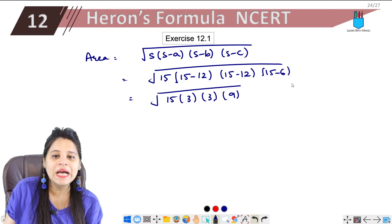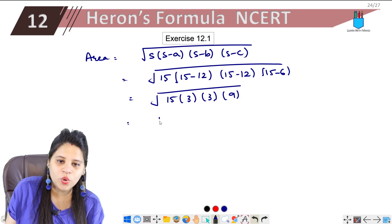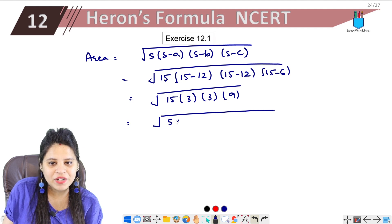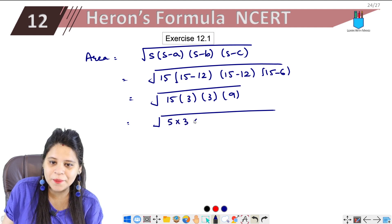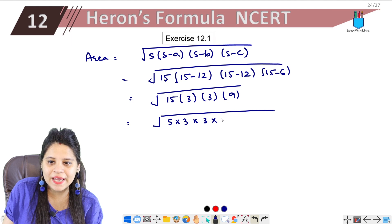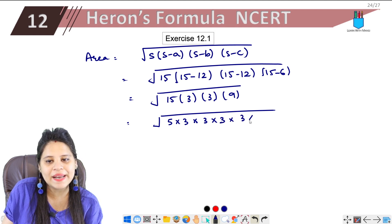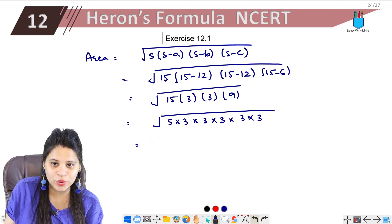Now we need to simplify. See, 15 I can write as 5 into 3. Here we already have 3 times 3, and 9 I can write as 3 into 3.